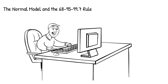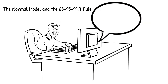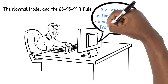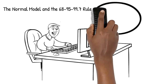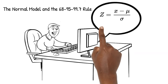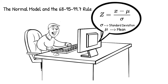In this video, we will be introduced to the normal model and the 68-95-99.7 rule. In a previous video, we learned that a z-score is the number of standard deviations a value is away from a mean. We also learned that to calculate the z-score, we use the formula z equals x minus the mean of the sample divided by the standard deviation of the sample. We will be using z-scores as we work with the normal model.